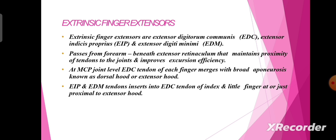The extrinsic finger extensors are the extensor digitorum communis (EDC), extensor indicis proprius (EIP), and extensor digiti minimi (EDM). They pass from the forearm beneath the extensor retinaculum, which maintains proximity of tendons to the joint and improves excursion efficiency. At the MCP joint level, the EDC tendon of each finger emerges with a broad aponeurosis known as the dorsal hood or extensor hood.